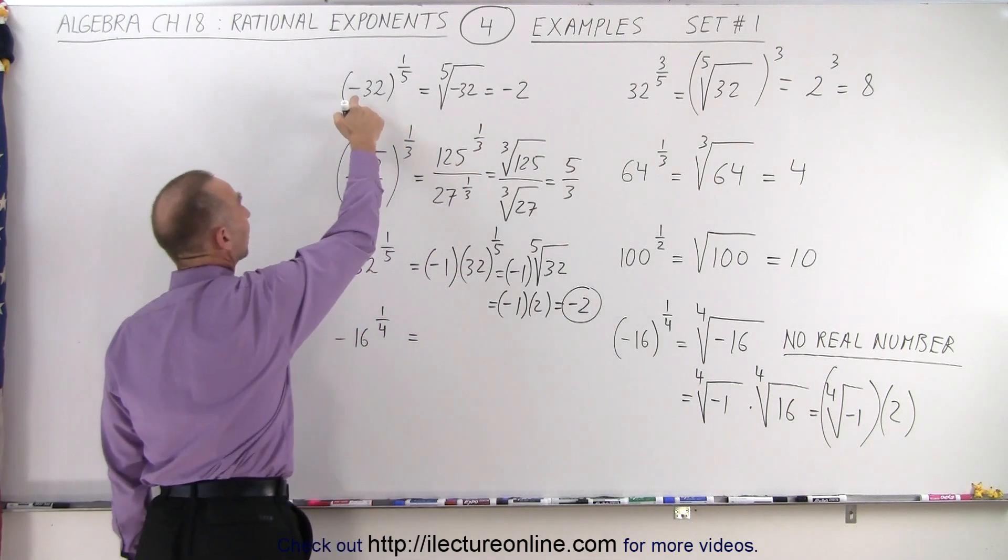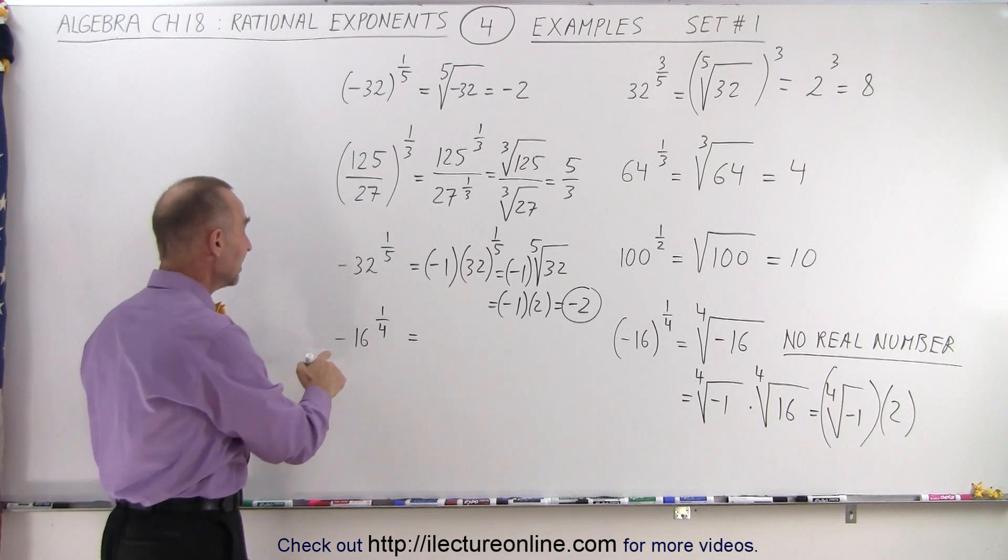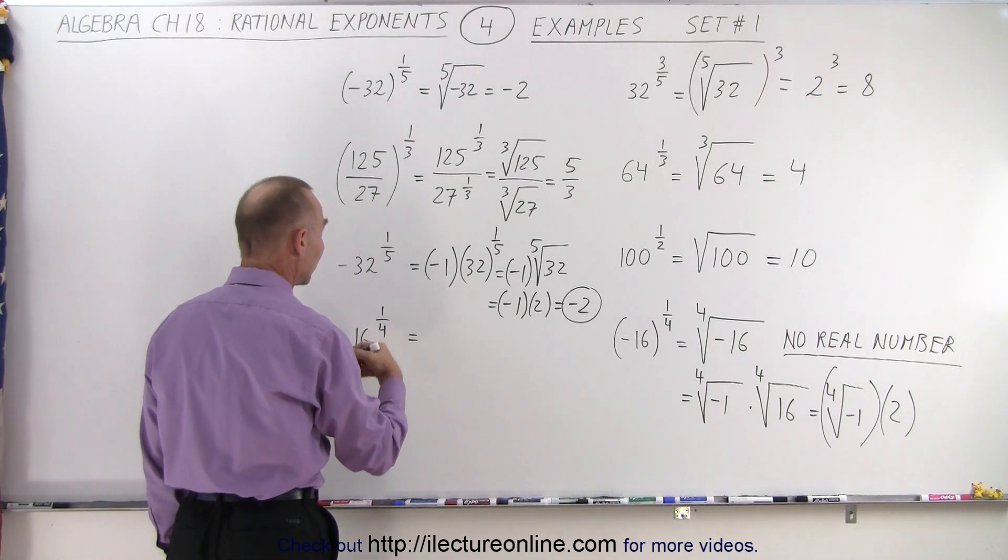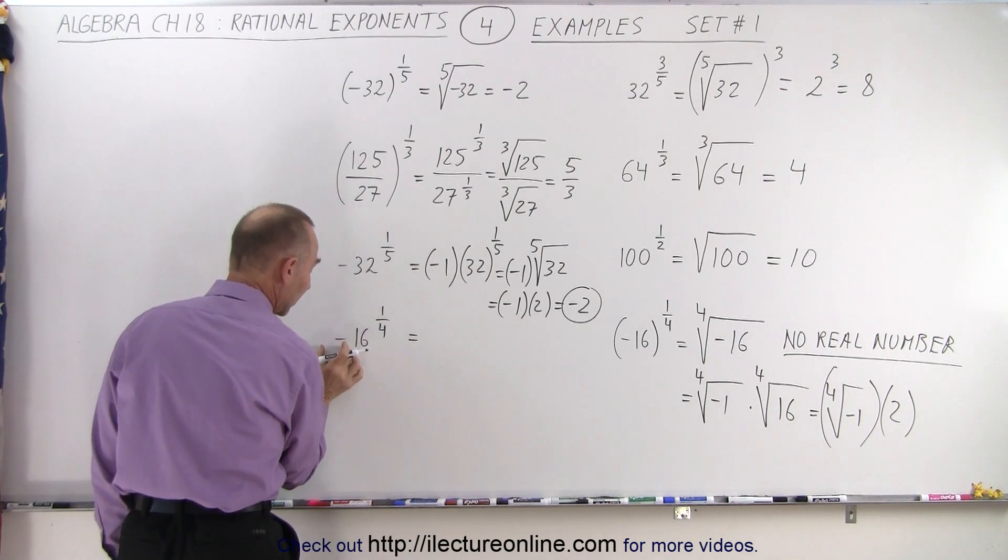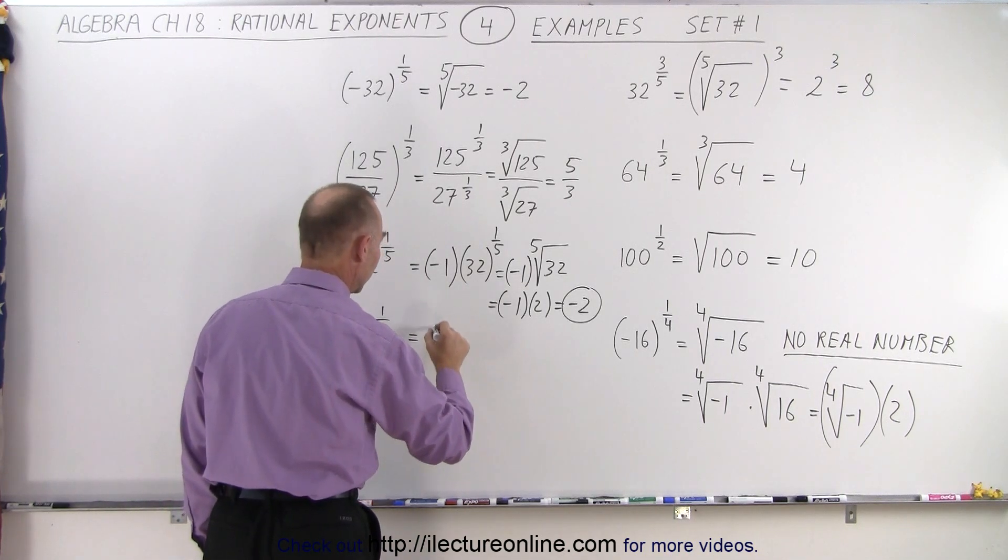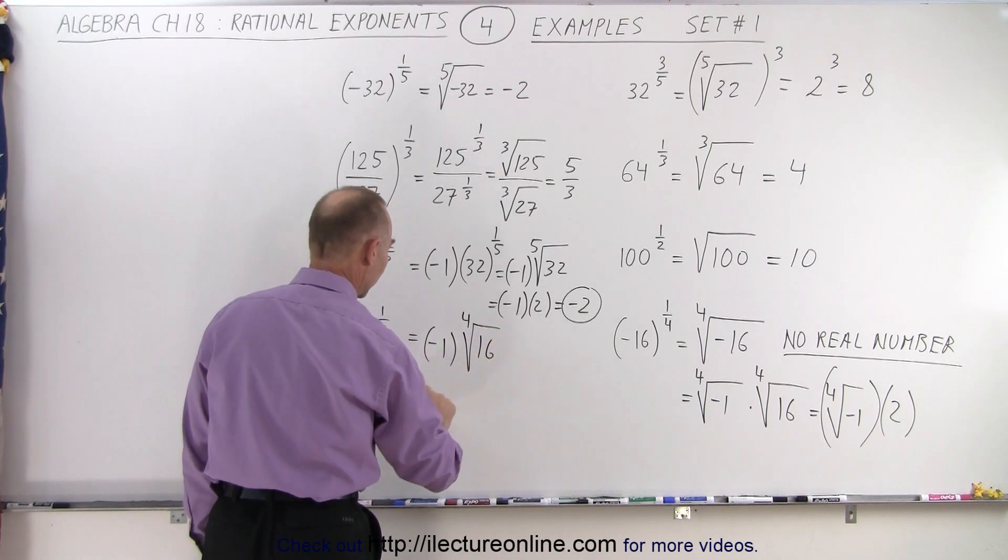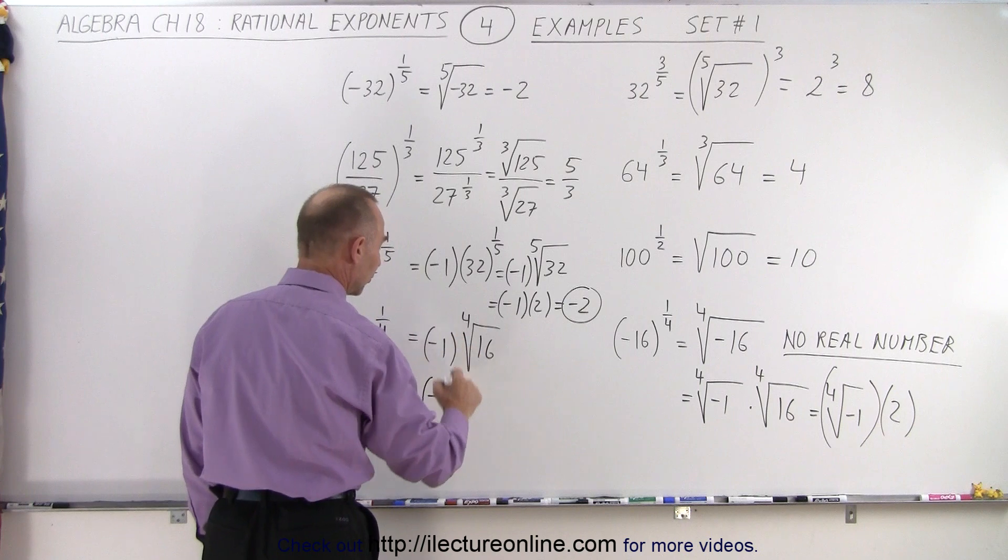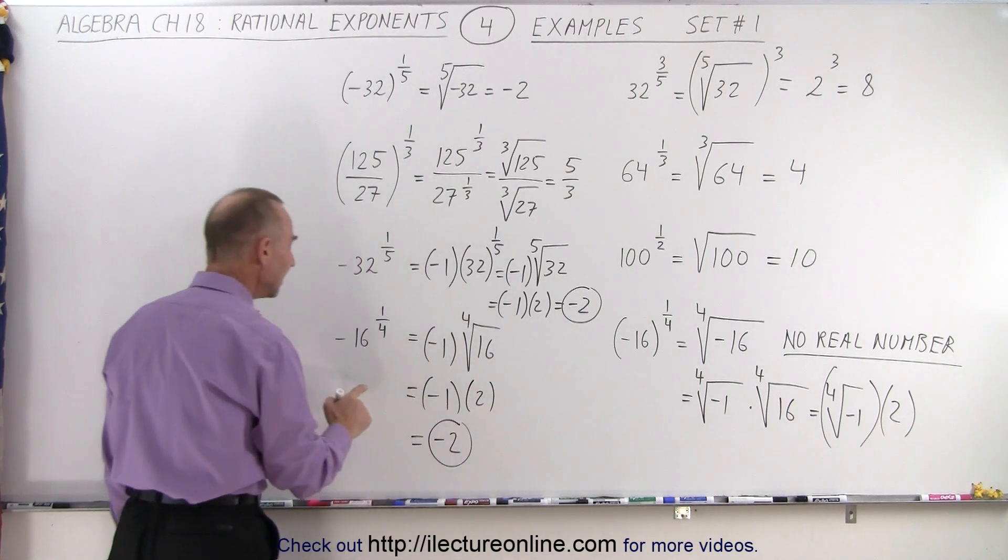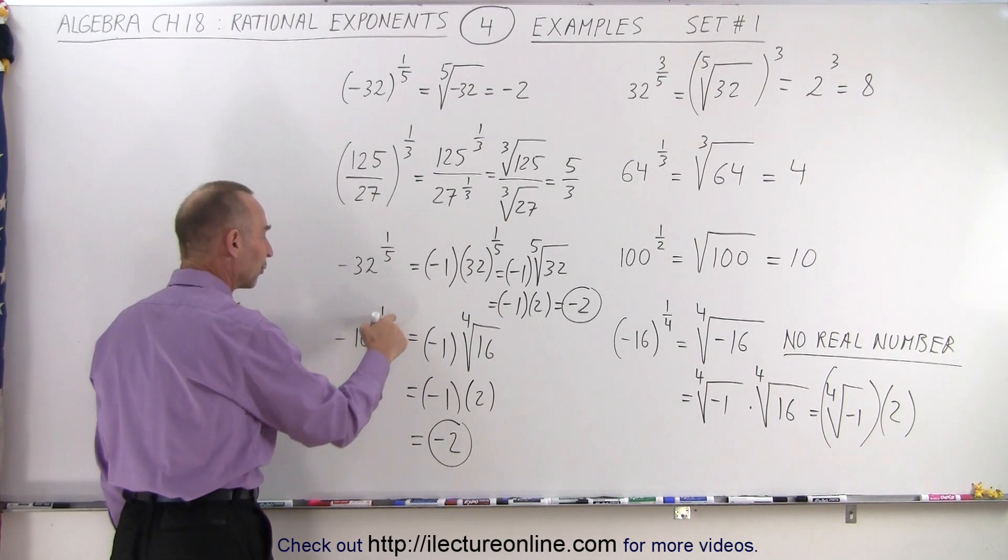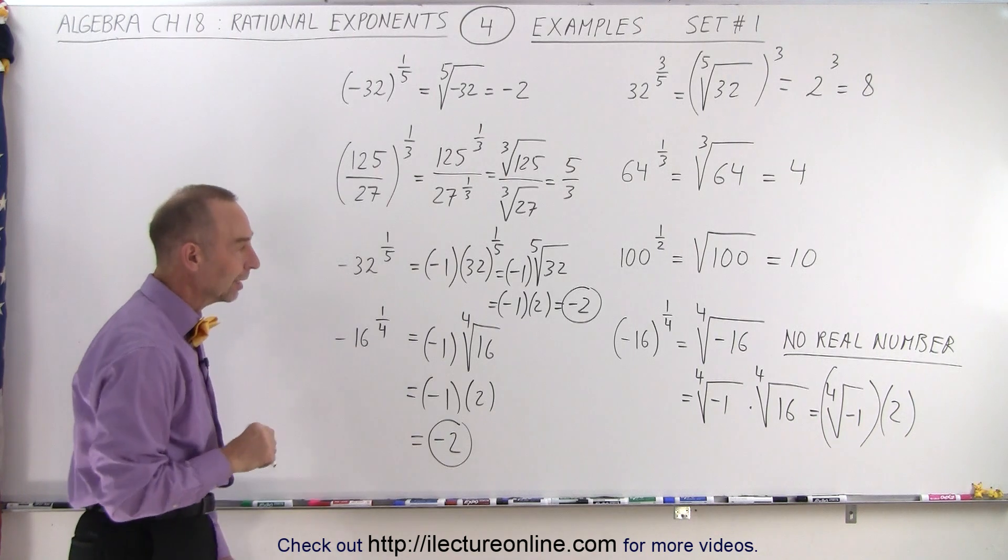So with an odd root, it doesn't matter if it's inside the parentheses or not inside the parentheses. And finally, negative 16 to the 1/4th power, there it does matter, because the 1/4th only applies to the 16 and not to the negative sign. So this is negative 1 times the 4th root of 16. And of course, that's negative 1 times the 4th root of 16 is equal to 2, and so that's also equal to negative 2. So we can take negative 16 to the 4th root, because the 4th root only applies to the 16 and not to the negative sign.